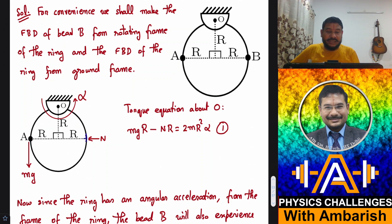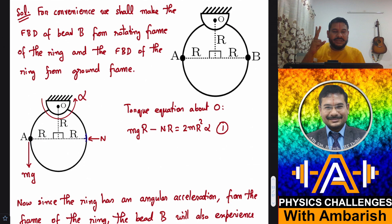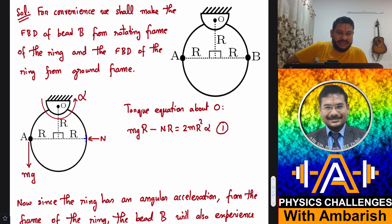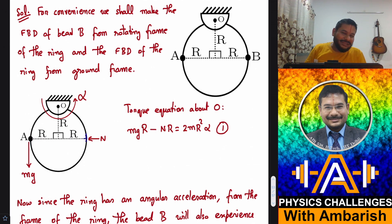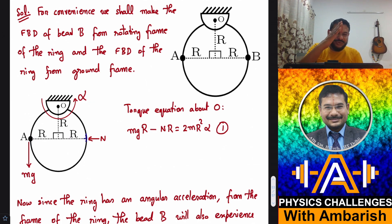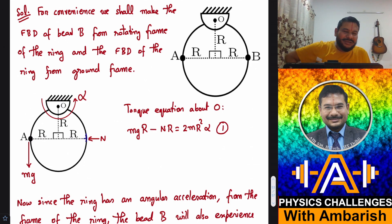We shall make the FBD of bead B from the rotating frame of the ring, and the FBD of the ring from the ground frame. Recall from standard theory the three pseudo forces applied in rotating frames: the centrifugal force, the Coriolis force (minus 2m omega cross V), and the Euler force when the rotating frame has angular acceleration. In our case, omega is 0 immediately after releasing the bead, so there is no centrifugal force and no Coriolis force.